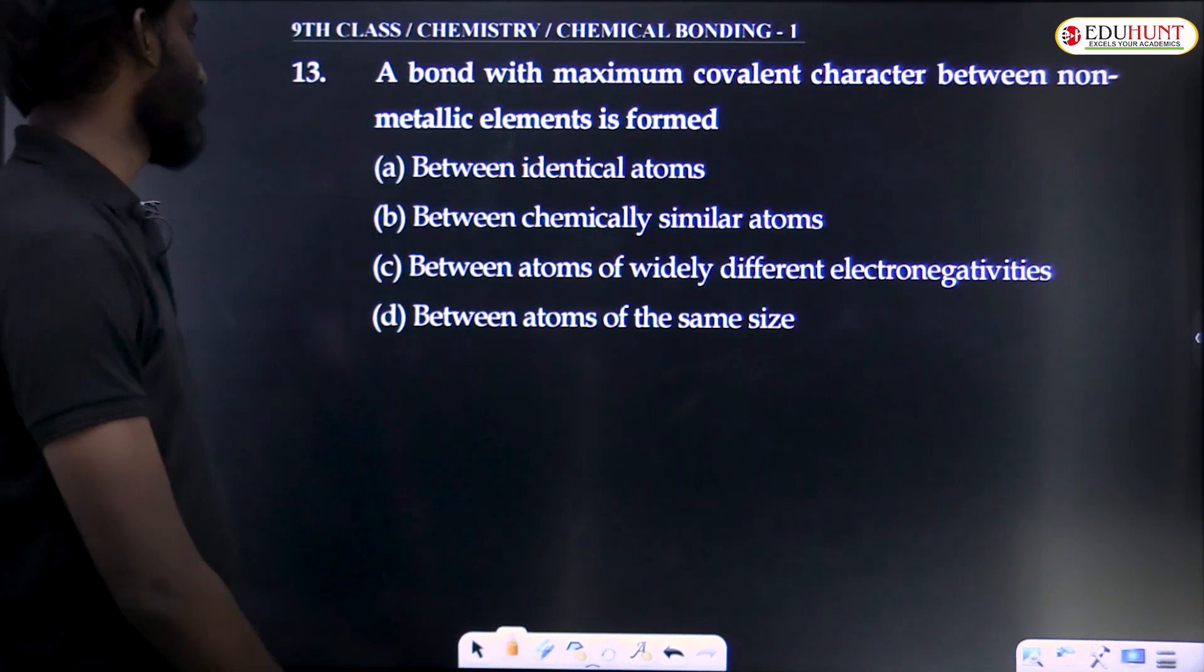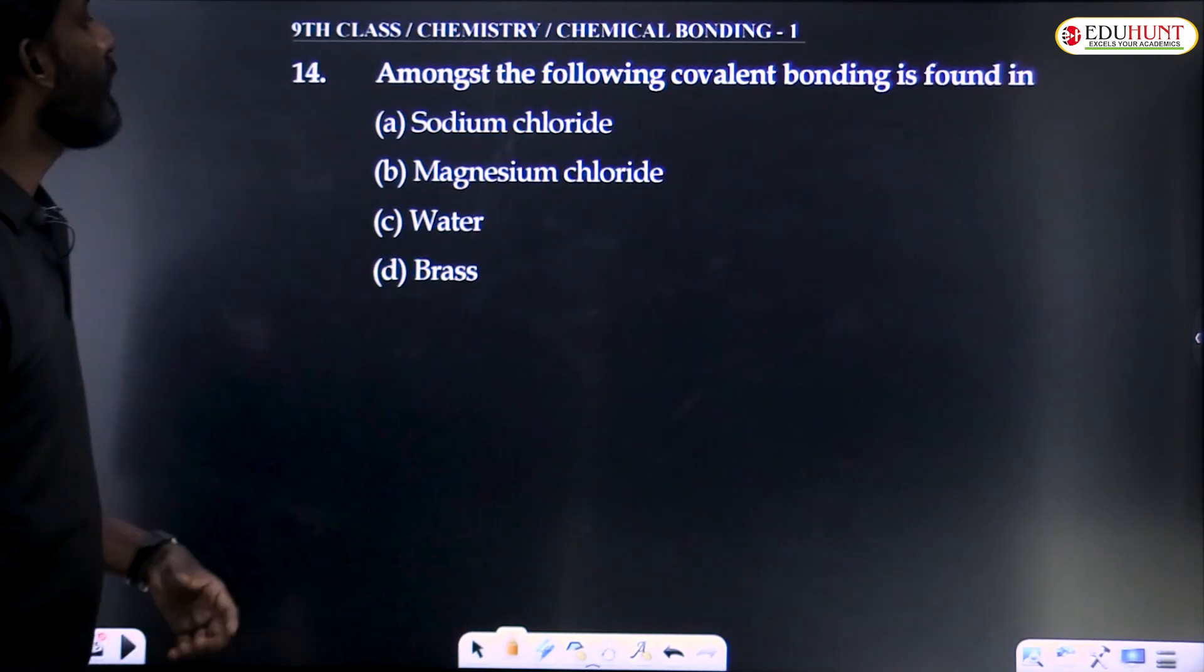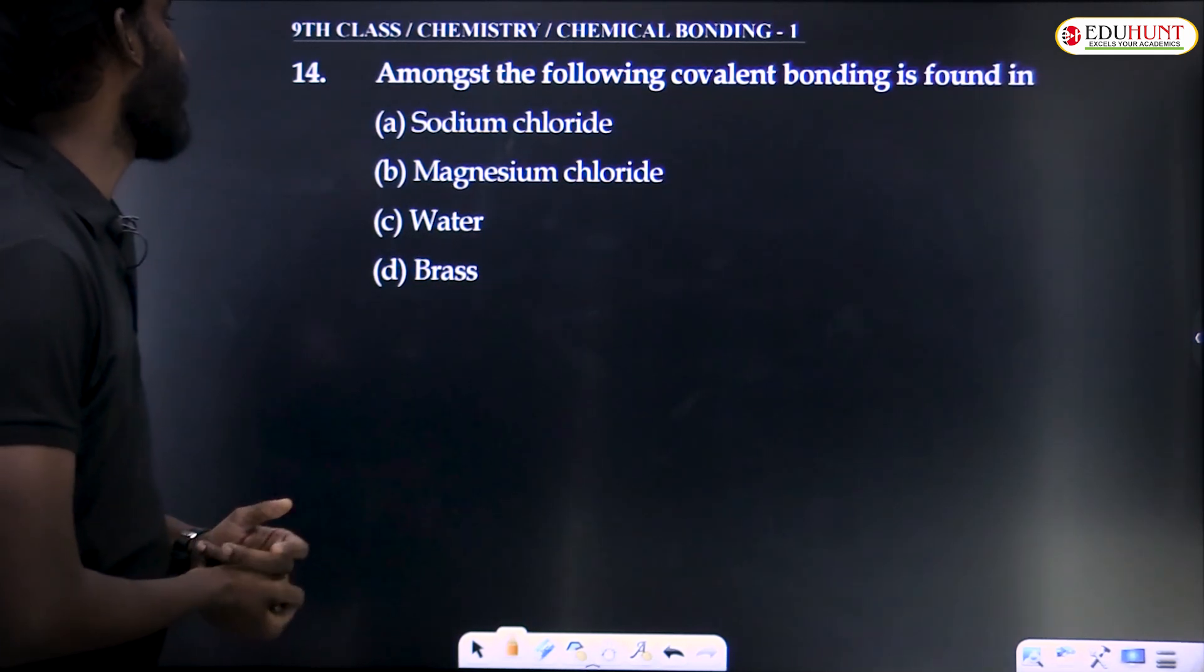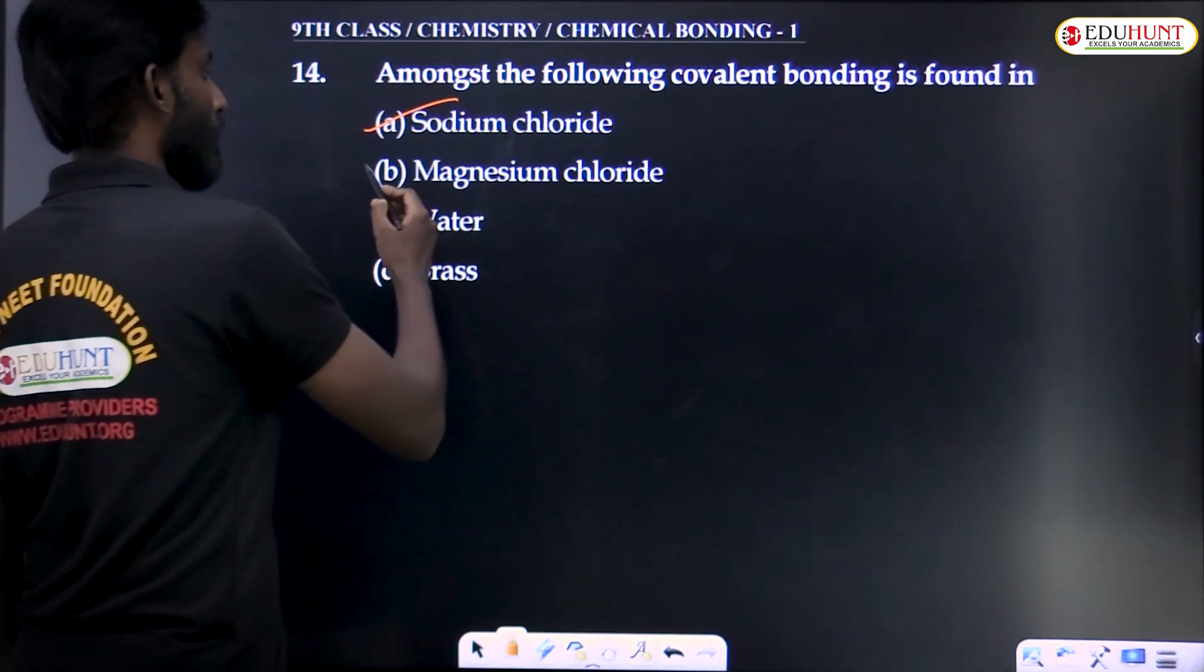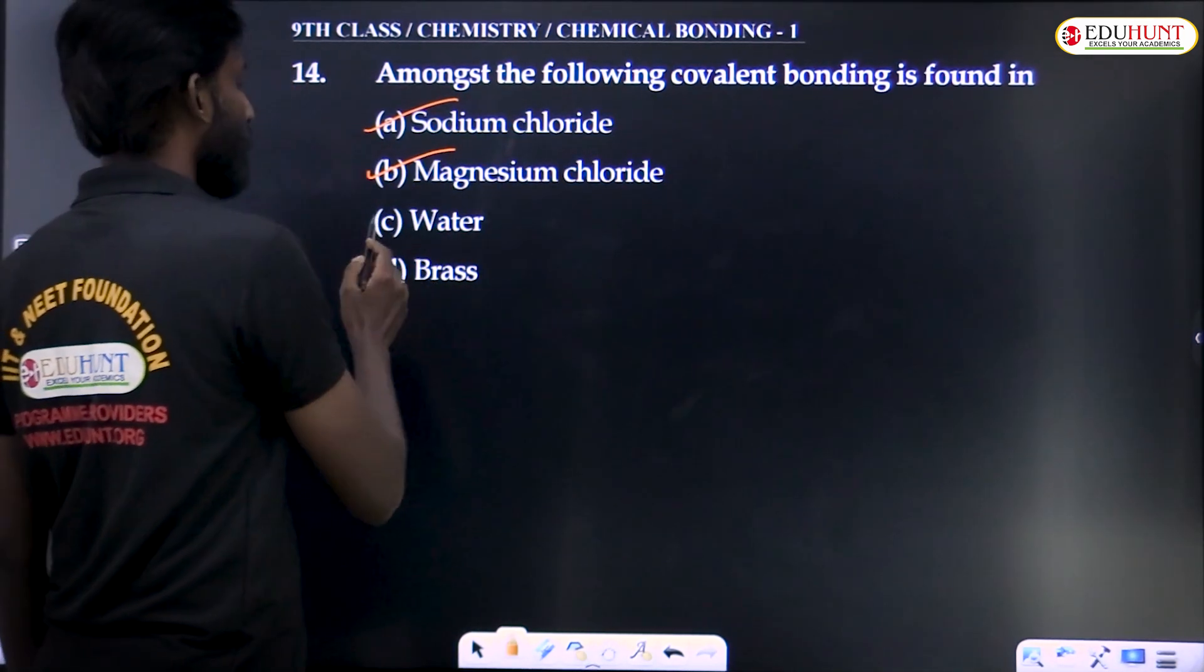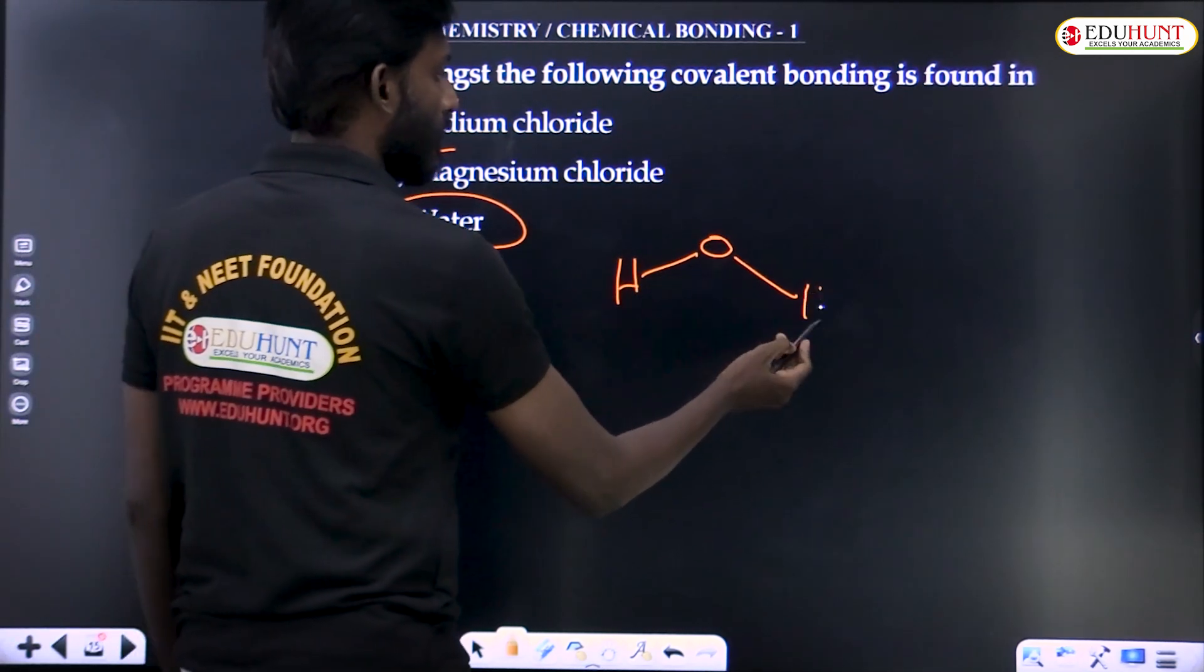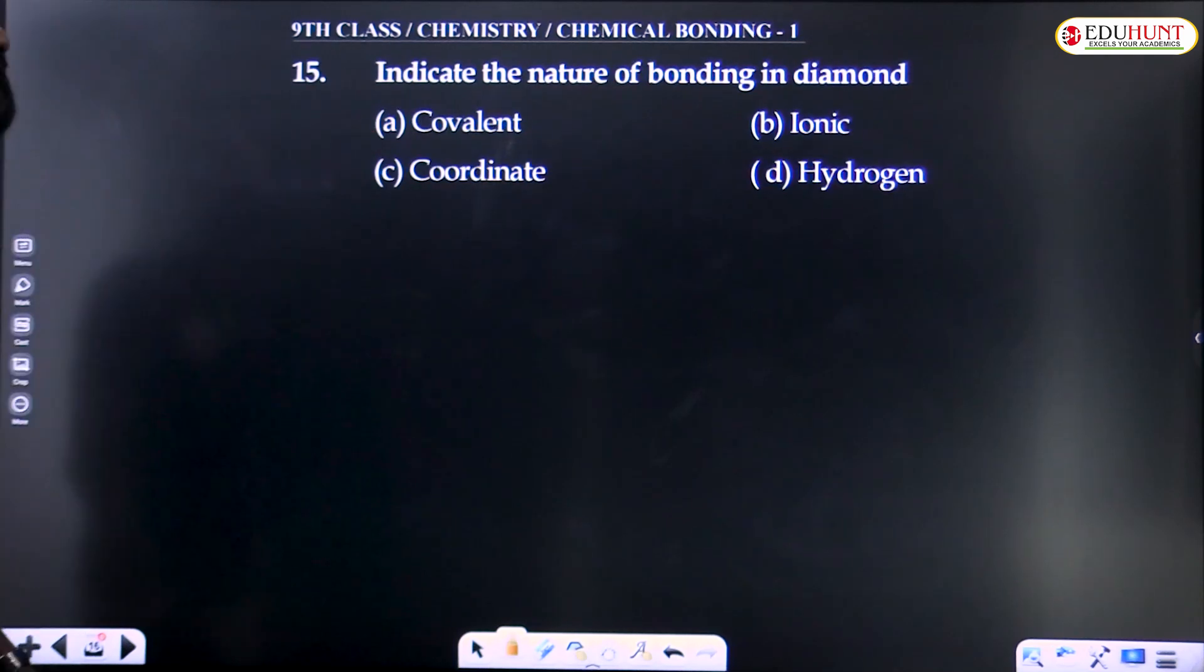The bond with maximum covalent character between non-metallic elements is formed. Same question repeated. Among the following, covalent bonding is found in - sodium chloride ionic, magnesium chloride ionic, water H2O. Oxygen and hydrogen have a covalent bond between them.